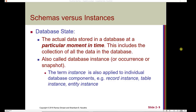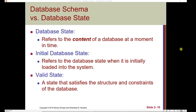A database state includes the collection of all the data in the database. It's also referred to as a database instance, occurrence, or snapshot. The term instance is also applied to individual database components — for example, a record instance, a table instance, or an entity instance. We'll work with blueprints and have instances of those blueprints: a blueprint of a student and then specific students that are instances. The initial database state refers to the database state when it is first loaded into the system, and does not necessarily have to have no data. A valid database state is a state that satisfies the structure and constraints of the database.